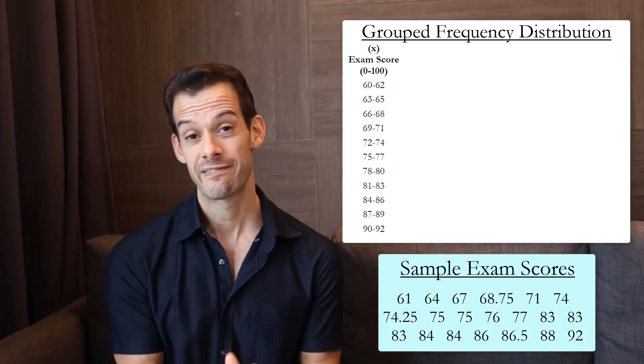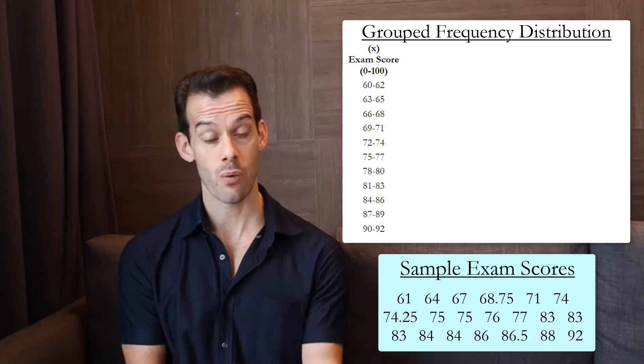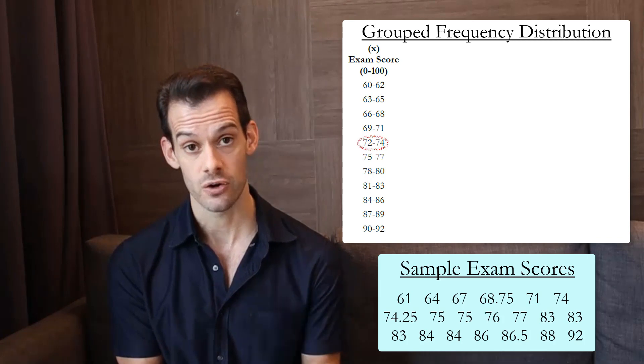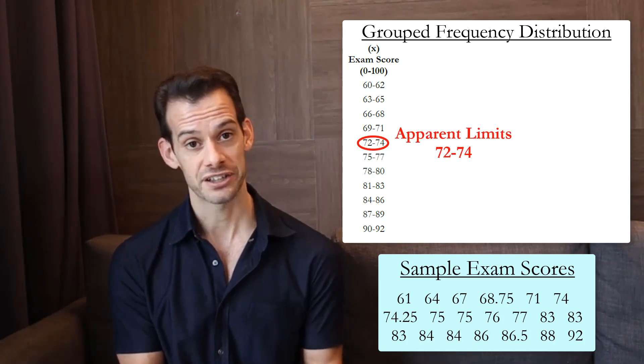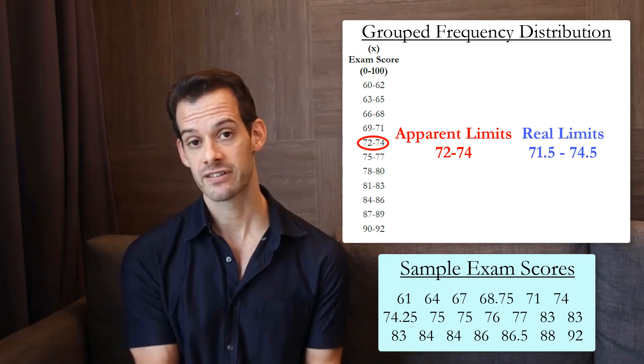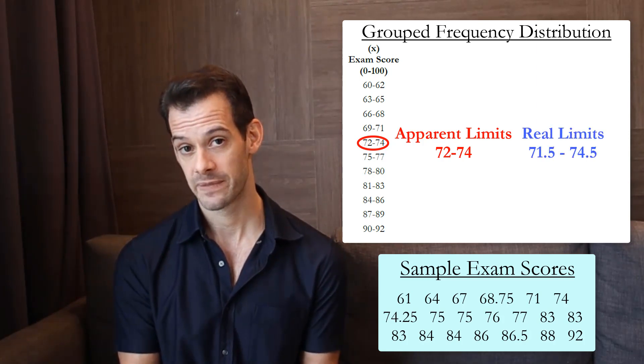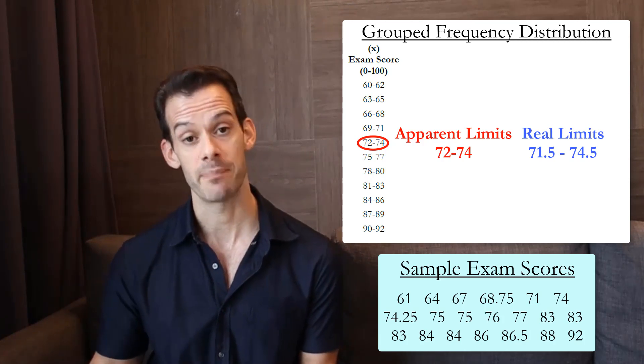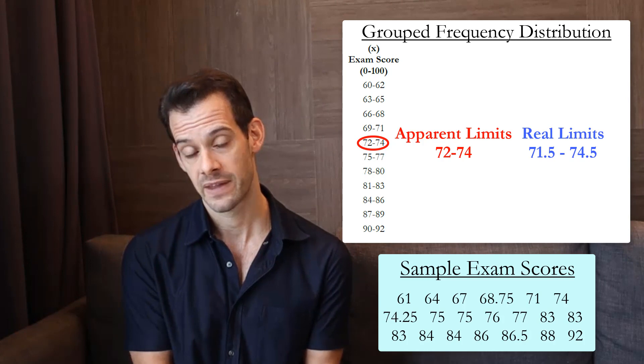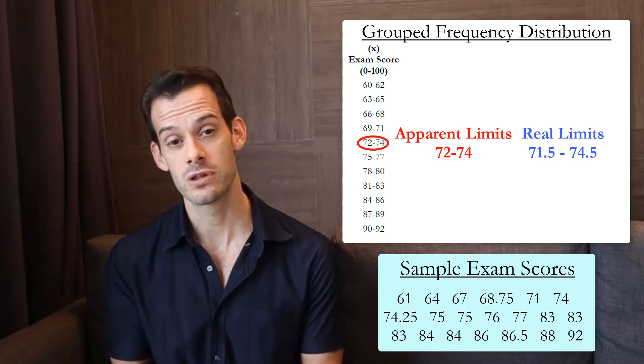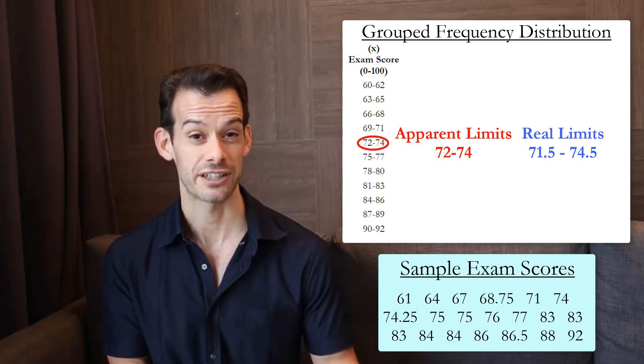This brings us to the difference between real and apparent limits of our class intervals. So if we look at one of the class intervals here, like the one that starts at 72, that's the apparent lower limit. But the real lower limit is actually 71.5. And this class interval actually extends up to 74.5. And then the next class interval that appears to start at 75 would actually start at 74.5. And so this allows us to smoothly transition between all of our class intervals, even if we have fractional data.